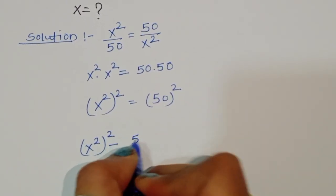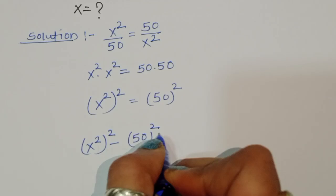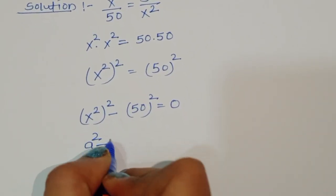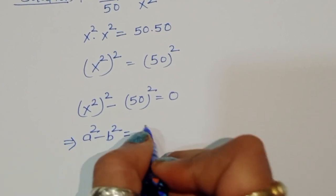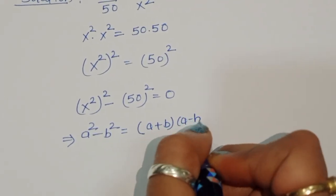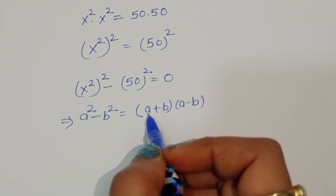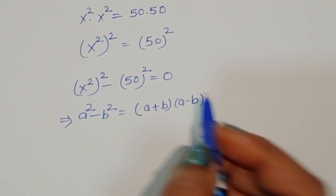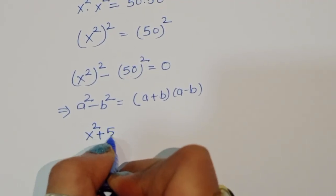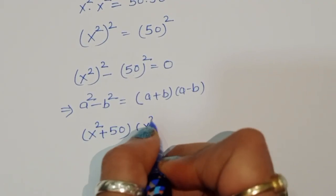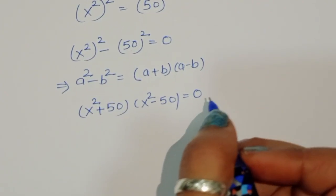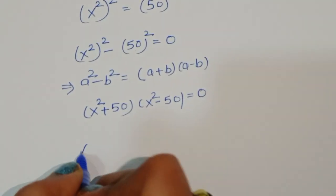Now we rewrite this as x to the power 4 minus 50 squared equals 0. This is the form of a squared minus b squared, which factors as (a + b)(a − b). Here a is x squared and b is 50, so we get (x squared + 50)(x squared − 50) = 0.